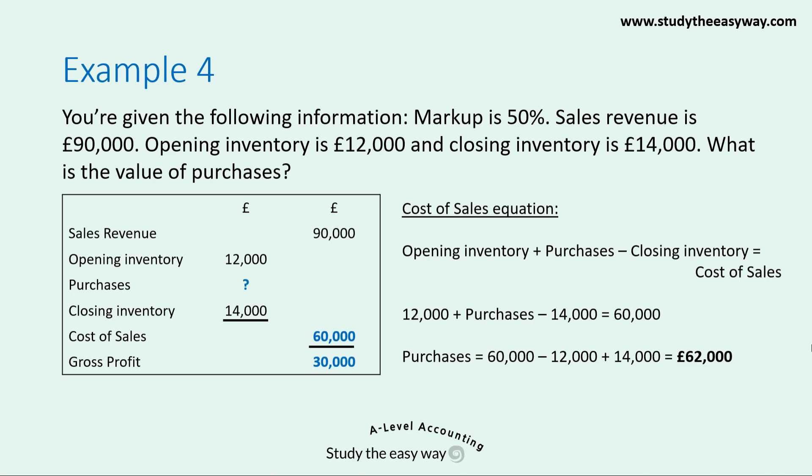I hope in this video you've found it really useful to understand how to convert between revenue and cost of sales using the margin or markup percentage, and how we can use that to calculate other missing figures such as purchases. In incomplete records questions, other missing figures in this section could include things like goods for own use or stolen goods, all of which can be calculated using a similar technique.